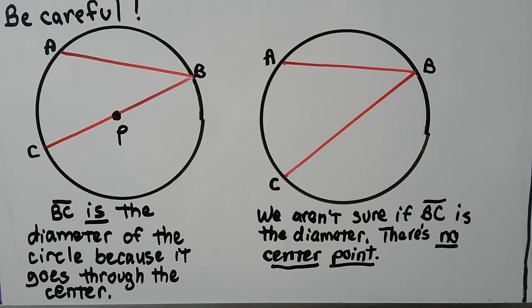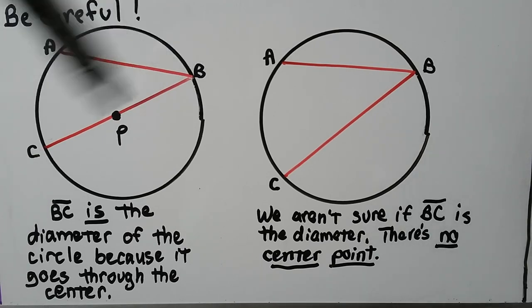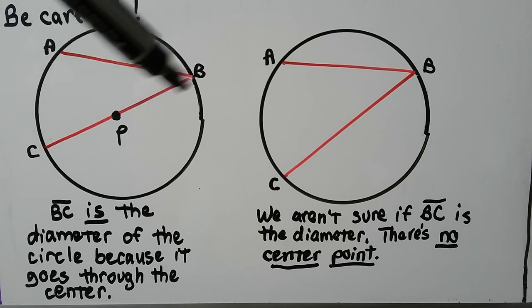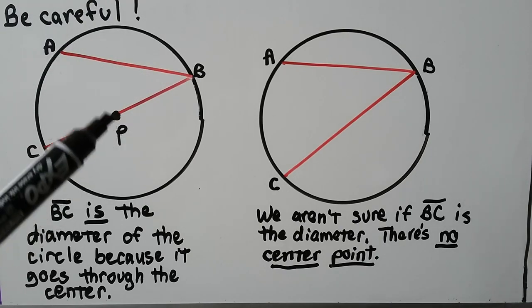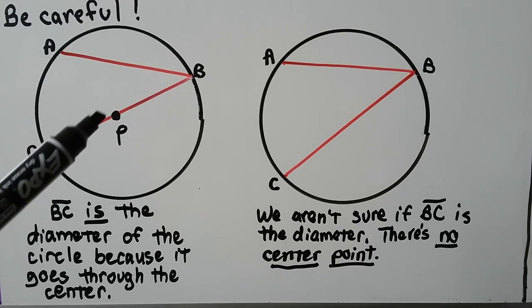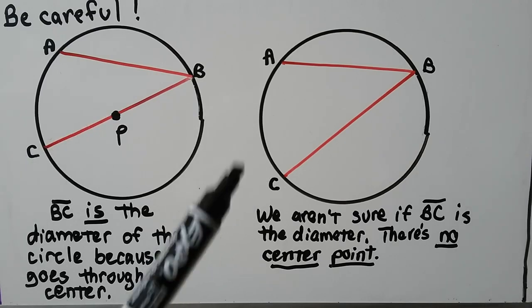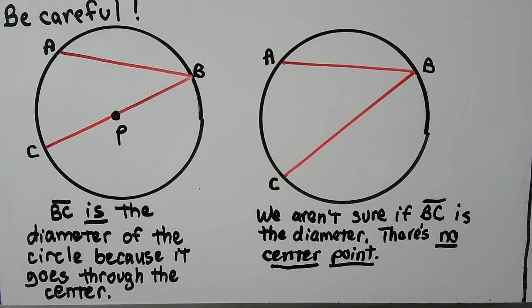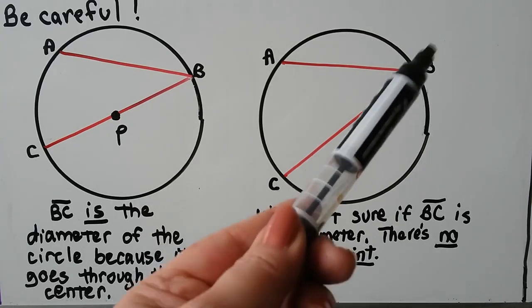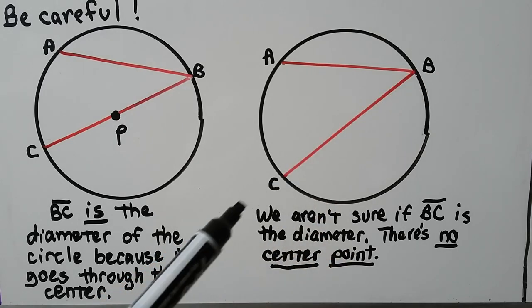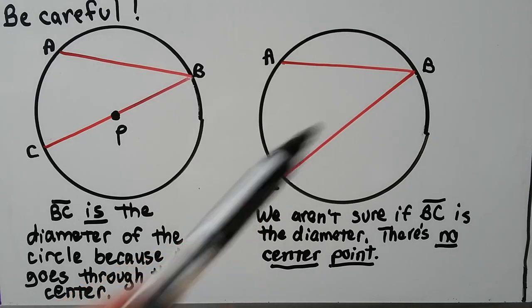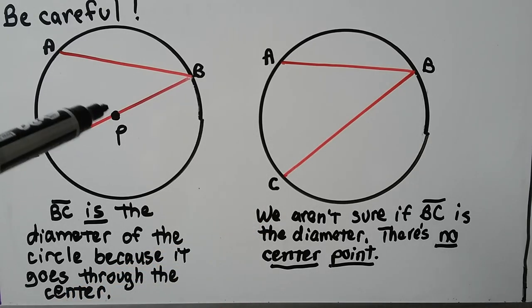Little caution advice here. Be careful. In this diagram, segment BC is the diameter of the circle because it goes through the center, we can see point P. But in this diagram, we aren't sure if segment BC is the diameter because there's no center point. Don't assume that a segment or chord is the diameter because there may not be a center point. It has to go through the center point and be shown to know that it's the diameter.